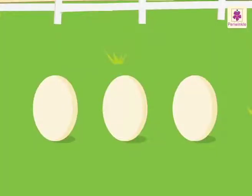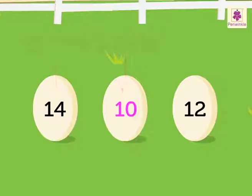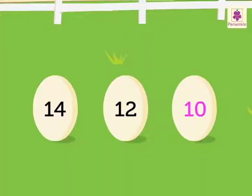Let's arrange 14, 10, 12 in descending order. Here, the greatest is 14 and the smallest is 10. Hence, the descending order is 14, 12, 10.